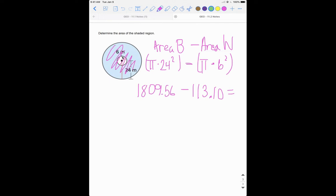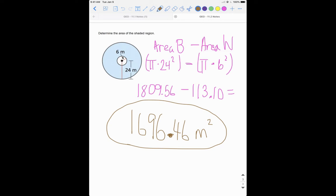We took the area of the whole thing minus the area of the white thing, and that's going to get us this blue region. So when we do this, we get 1696.46. Make sure you talk about your units—we're talking meters and area is squared. So that blue region is 1696.46 meters squared.